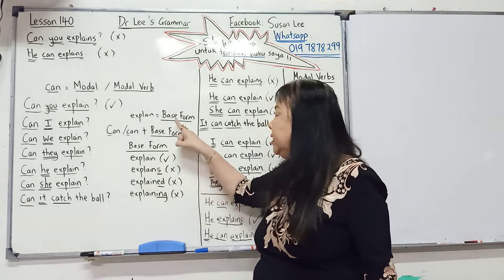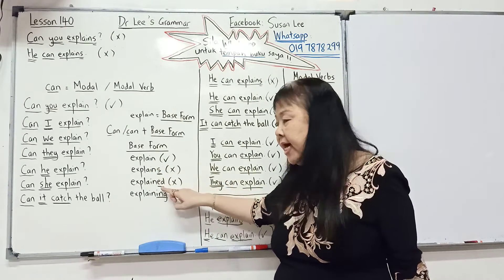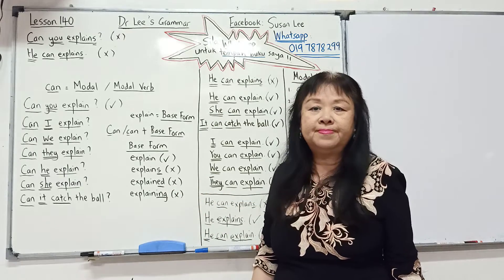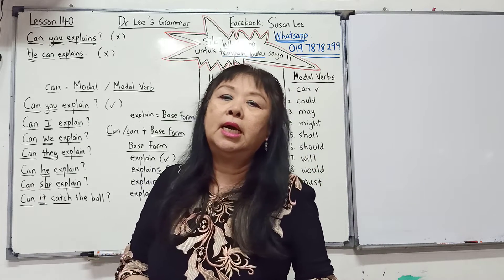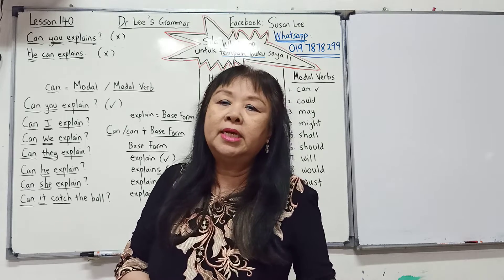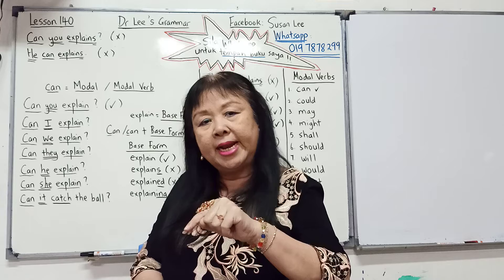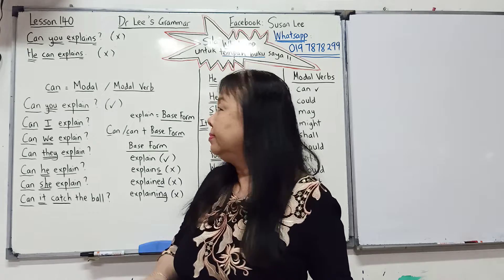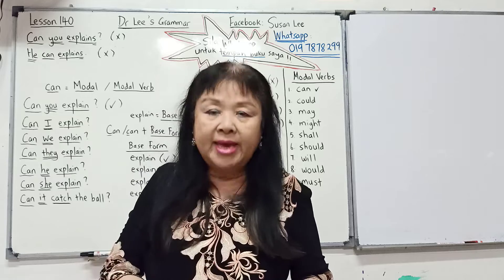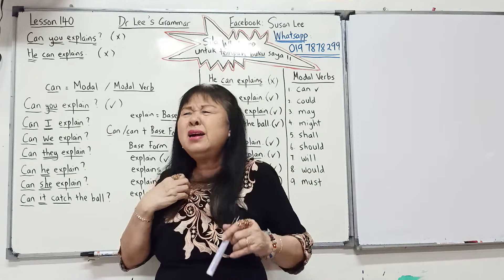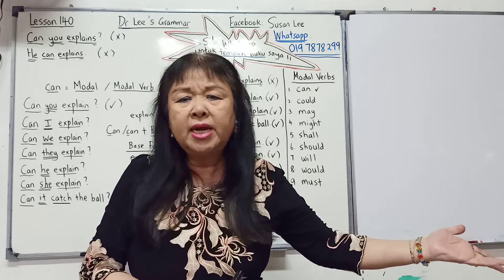Tidak boleh lain jawapan. Dan kata asal dipanggil base form. Base form artinya perkataan yang tidak ada S, tidak ada ED, tidak ada ING di belakangnya — itu dipanggil base form. Jadi para pelajar yang sedang mengikuti video saya, saya mahu kamu ingat: jikalau kamu lihat atau menggunakan perkataan 'can', maka perkataan di belakang can mesti kamu gunakan base form. Dan perkataan 'can' ini sangat-sangat biasa digunakan, sama ada dalam penulisan, percakapan, di pejabat, berniaga ataupun belajar.